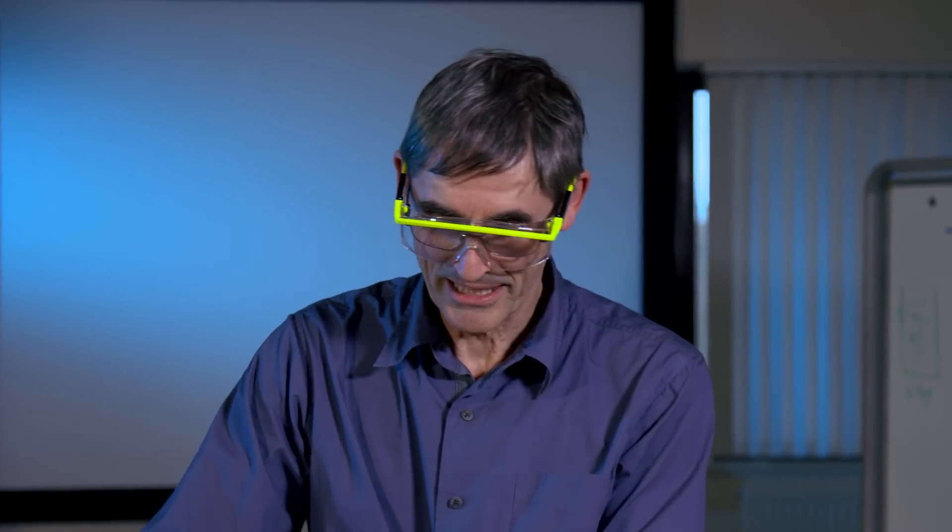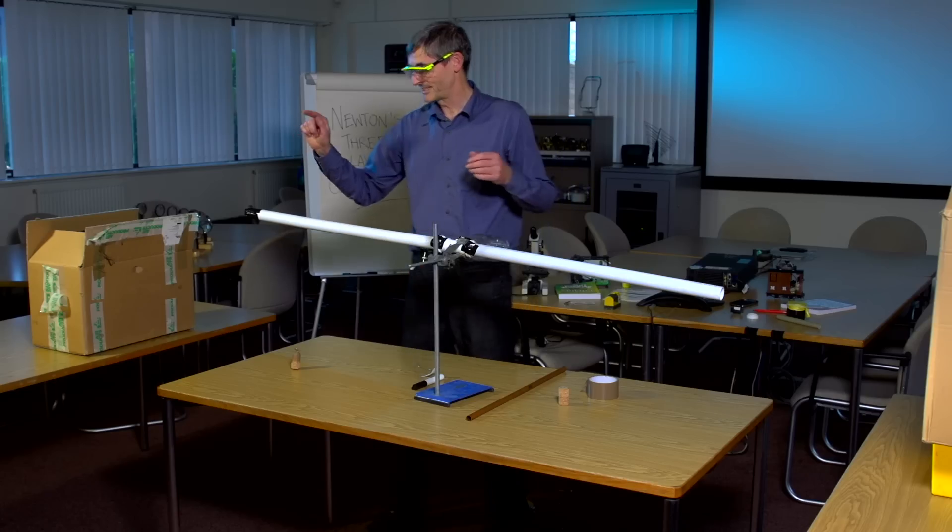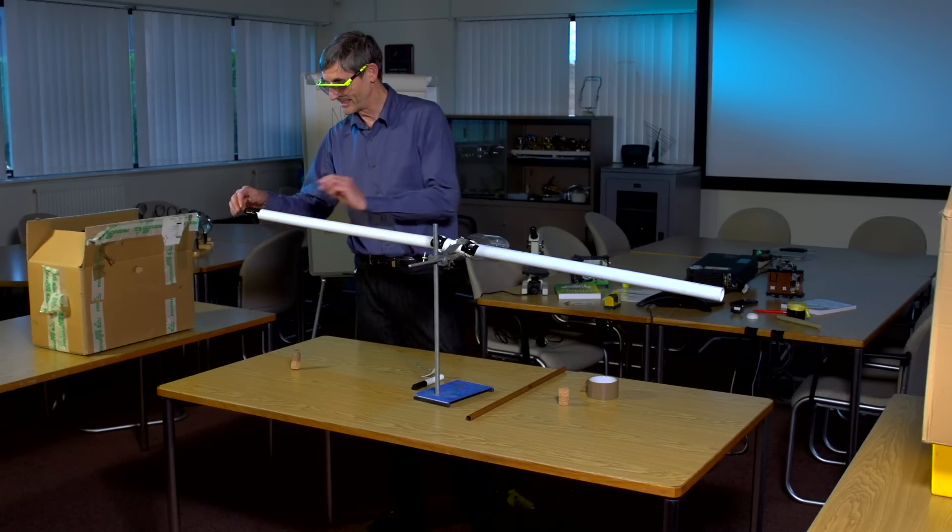We can fix that by making a true three laws cannon by putting a projectile on this end as well. We're going to fire two projectiles, one from this barrel and one from this barrel, in opposite directions into the stop boxes here and here.